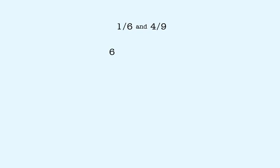We start with six and list some multiples, as shown here. Then we take nine and list some multiples. The least common multiple is the smallest number included in both of these lists of multiples. In this case, it's eighteen.